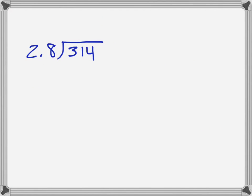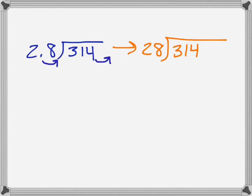What about a long division problem like 314 divided by 2.8? You may have been taught that when you have a decimal in a long division problem, you move the decimal point so that the number you're dividing by doesn't contain a decimal — and then we do the same thing to the larger number 314 as well. So we would rewrite this problem as 28 being divided into 3140.